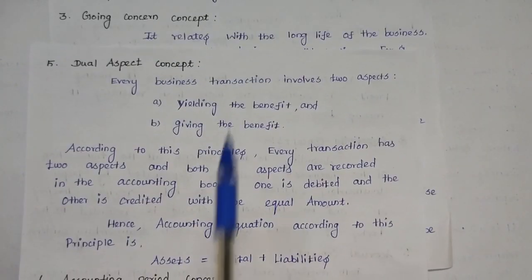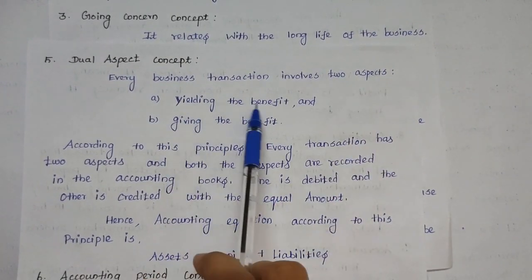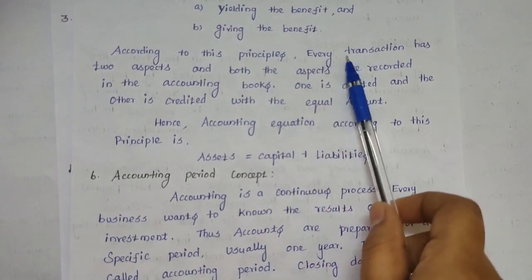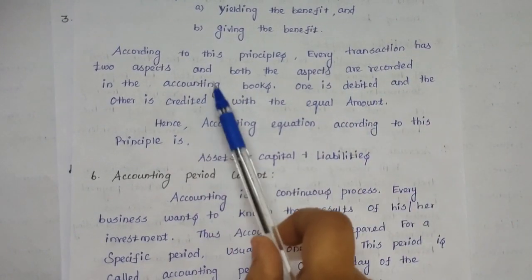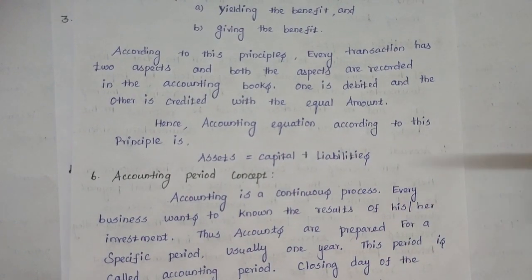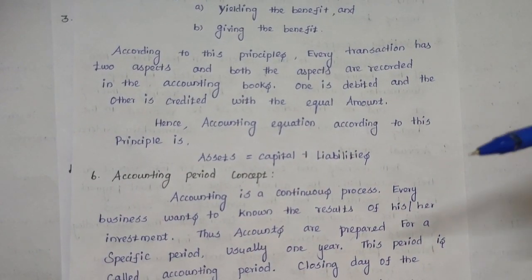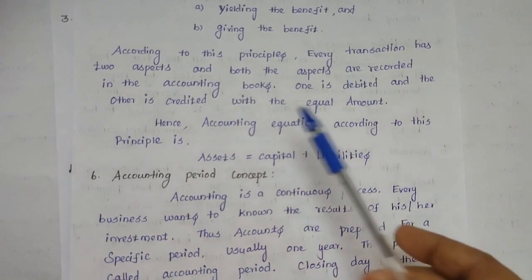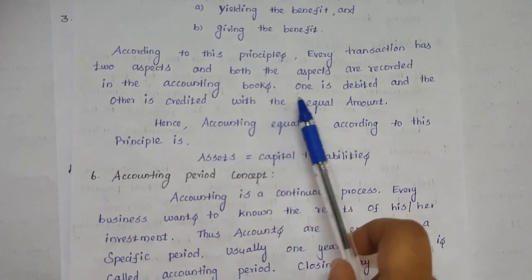The next concept is the dual aspect concept. Every business transaction involves two aspects: yielding the benefits and giving the benefits. According to this principle, every transaction has two aspects, and both aspects are recorded in the accounting books. For example, if goods are purchased for cash of 50,000, the purchasing account is debited and the cash account is credited with the equal amount.